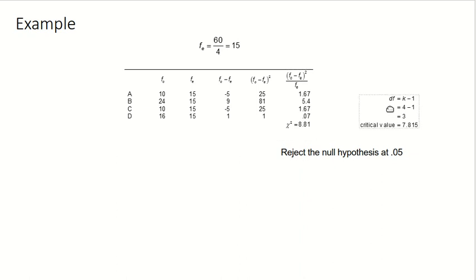With degrees of freedom of k minus 1, which is the number of categories minus 1, we have four groups here. So 4 minus 1 is 3. That gives us 7.815 if we look that up on the chi-square table. Because 8.81 is greater than 7.8, we reject the null hypothesis of no difference.